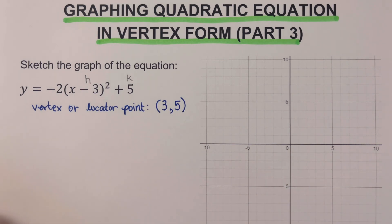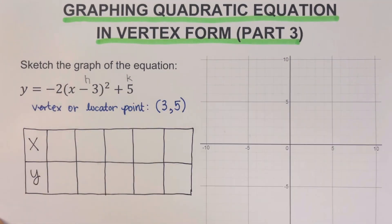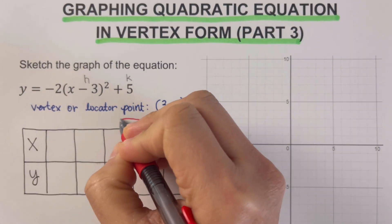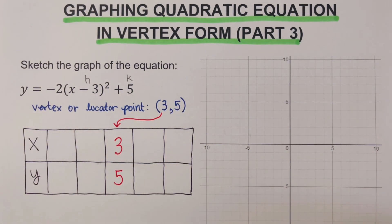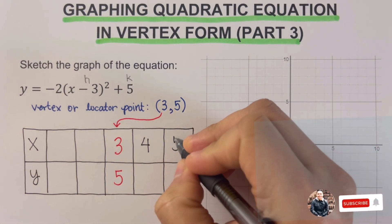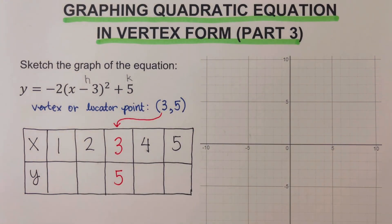The second step is to create and complete the table of values. We place the locator point — the vertex — in the middle of the table, so we have x = 3 and y = 5 in the center. Then we determine the surrounding x-values: after 3 comes 4, then 5, and going the other way, 2 and 1.